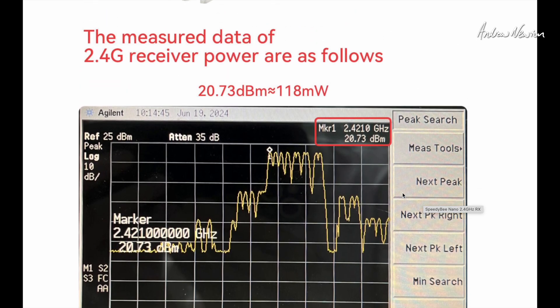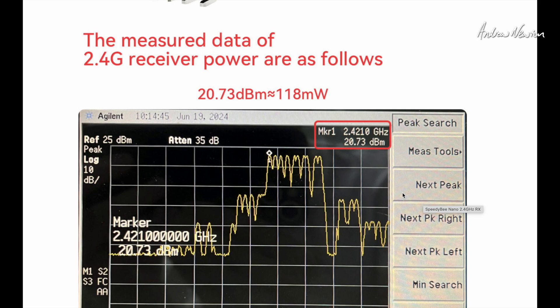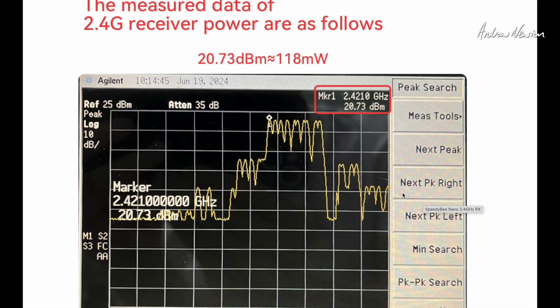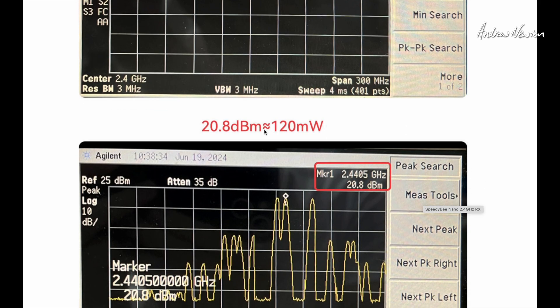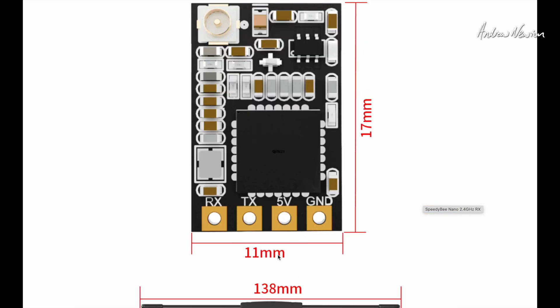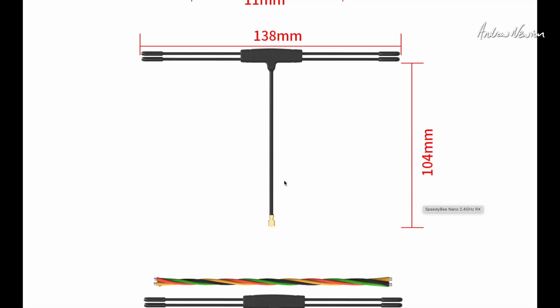And there are some measurement details there showing that you can get actually up to 120 milliwatts output for the telemetry. And here's the 915 megahertz variety with the bigger antennas.